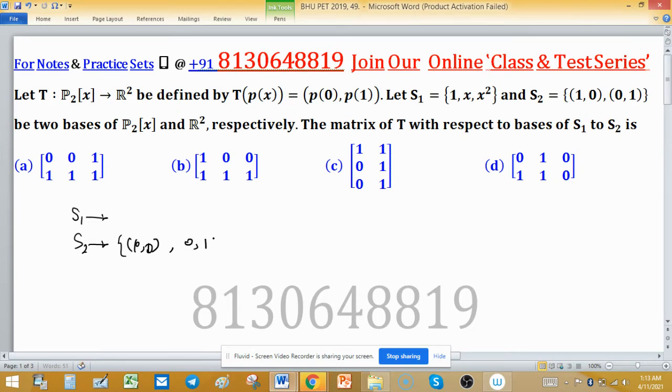S₁ for the domain is {1, x, x²}. The element 1 helps us generate constant polynomials, x helps generate linear polynomials, and x² generates quadratic polynomials. (1,0) helps us locate elements on the x-axis and (0,1) locates elements on the y-axis. Linear combinations of these help generate any element in R². These are the basis or generating set.